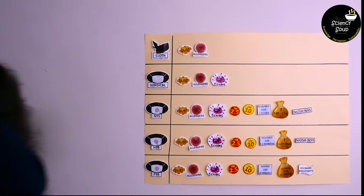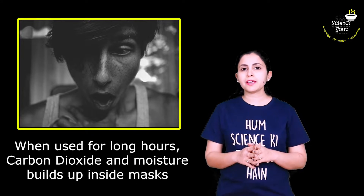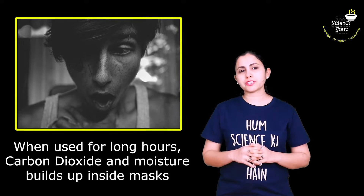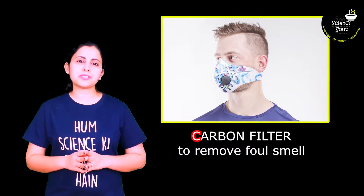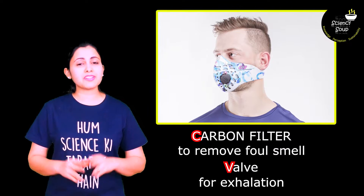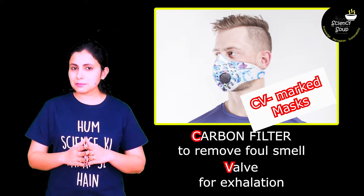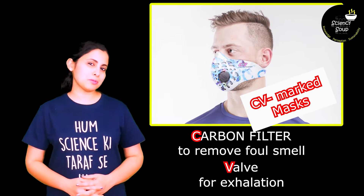So those are the main types of air masks and some of their specifications. The main problem with using any mask is that some people find them suffocating. If you are using them for a long time, carbon dioxide and moisture builds up inside. To overcome this, many masks these days come with a carbon filter that removes any foul smell and a valve that helps in exhalation. Such masks come with a CV mark on them. These masks make breathing a lot easier because there is no moisture retention or foul smell.